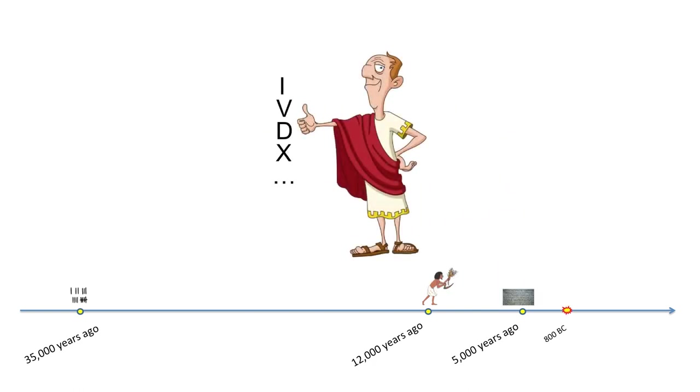800 B.C. Roman numerals emerged. I can't find the exact dates, but I assume it would be around 800 B.C. because that's the time for ancient Rome. So let's say it is around 800 B.C.